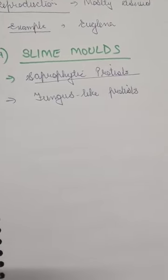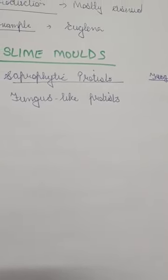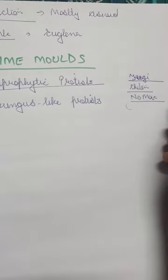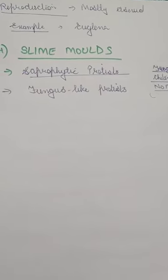What is the difference between slime molds and fungi? Both of them have cell walls, but fungi have a cell wall made of chitin, whereas slime molds do not have chitin. Also, fungi cannot show any movement, but slime molds can move a little. That's why slime molds are not fungi — they look like fungi but are not exactly fungi.